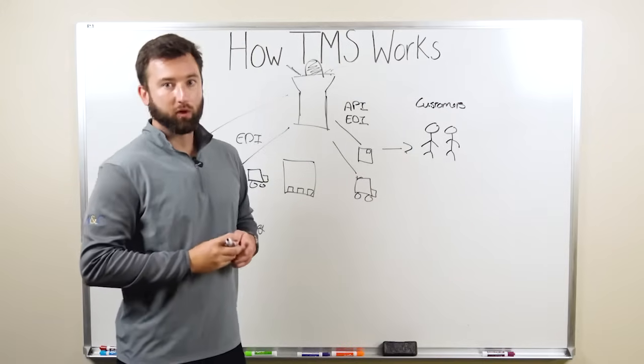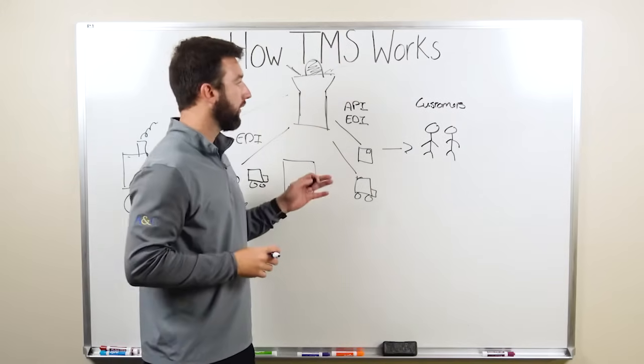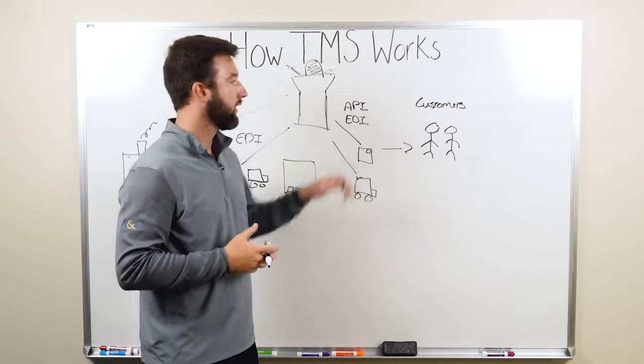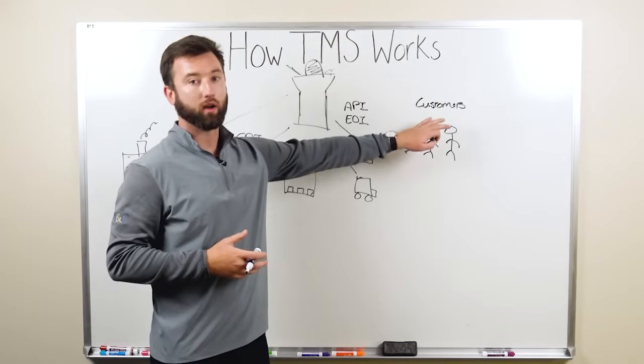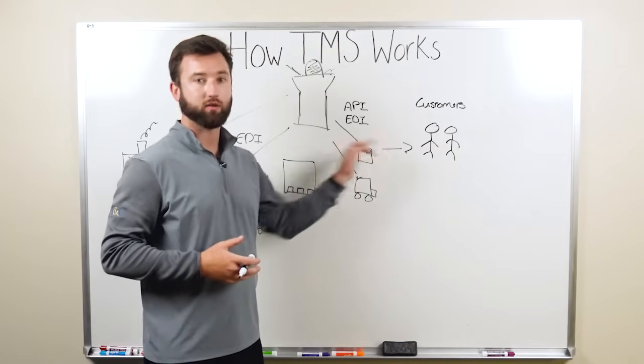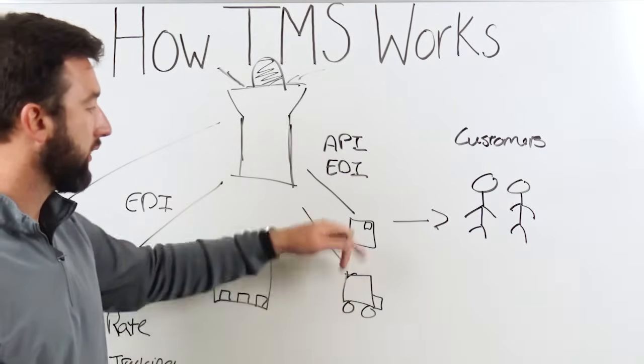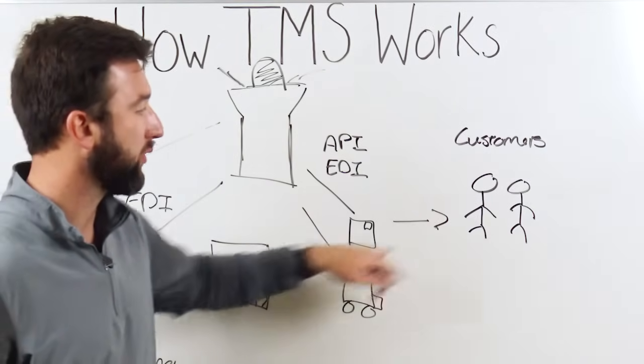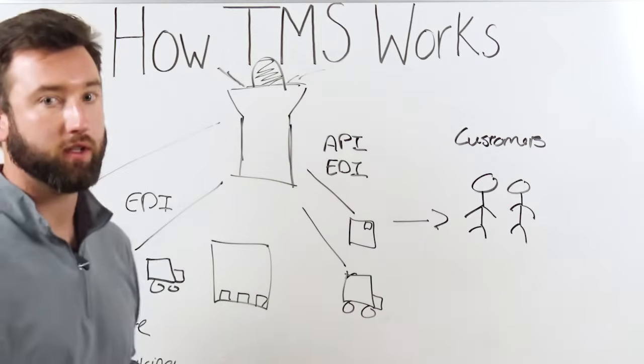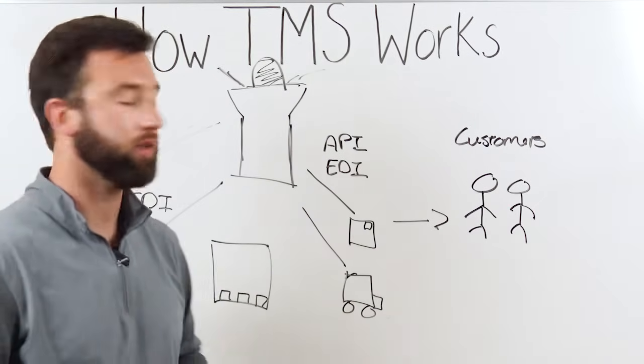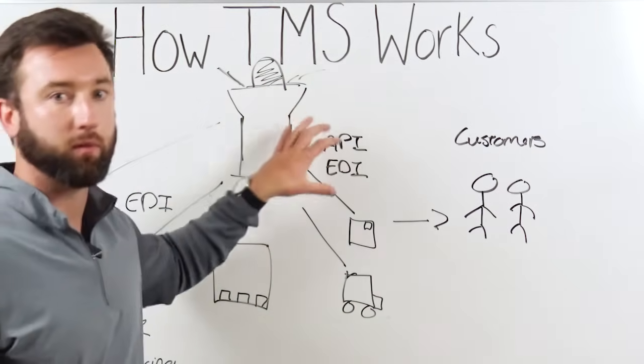What a lot of companies will do, and most people have this experience when they shop on Amazon, is those customers more and more want to understand where their products are in transit. They want to be able to track from the distribution center through transport to delivery. That's one way that you can offer an increased customer experience through a powerful system like a TMS.